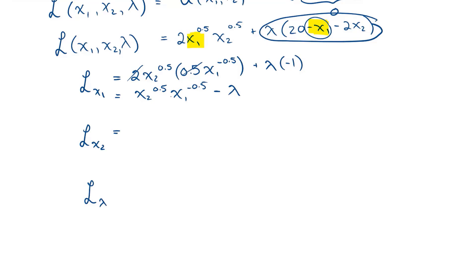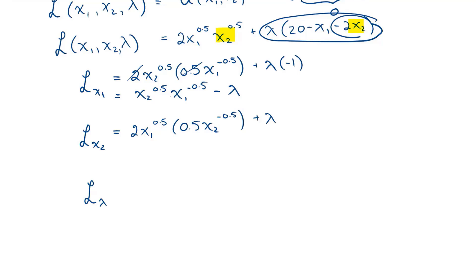Taking the derivative with respect to x2: we get 2 · x1^0.5 times 0.5 · x2^(−0.5). Lambda is a scalar coefficient, and the derivative of negative 2x2 is negative 2. The 2 and 0.5 cancel each other out, giving x1^0.5 · x2^(−0.5) minus 2·lambda.